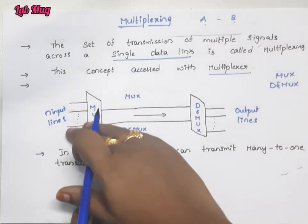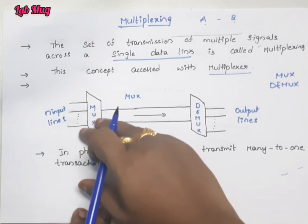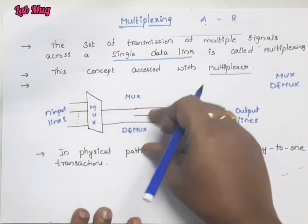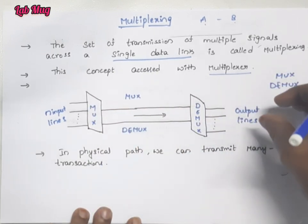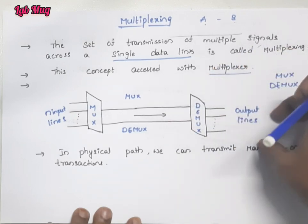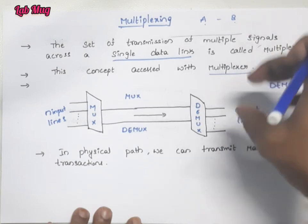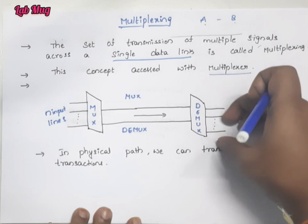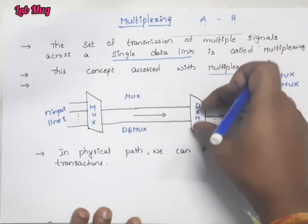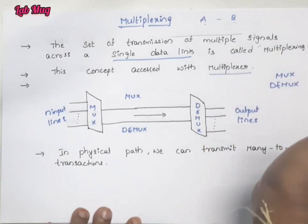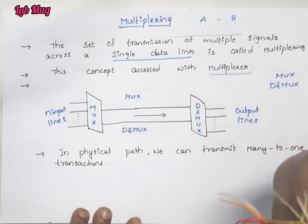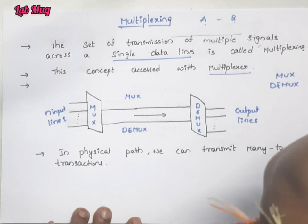When we enter data and transfer the signal through the medium, at the receiving side the receiver needs to understand the signal. So we convert the signal into a receiver-understandable format using the demultiplexer. The demultiplexer separates the combined signal back into individual output lines.